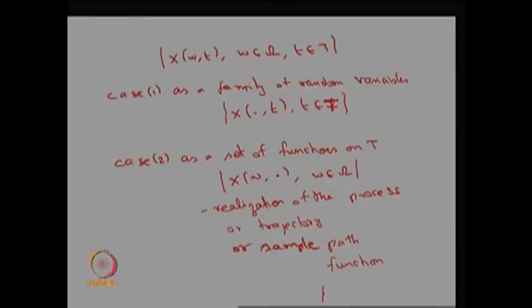In conclusion, you can always define a stochastic process as a collection of random variables for different values of t, or you can go for a collection of functions on T for different values of possible outcomes w belonging to omega. These are the two approaches to create the stochastic process.